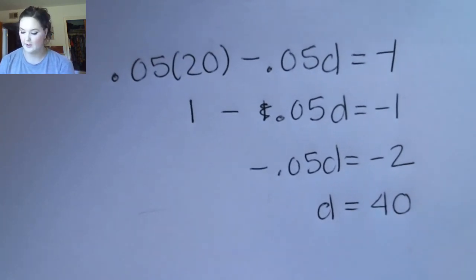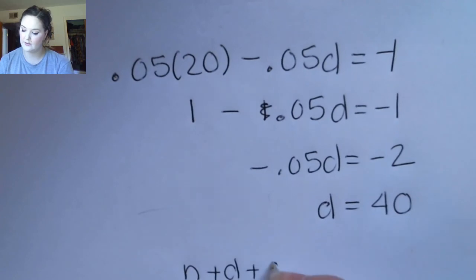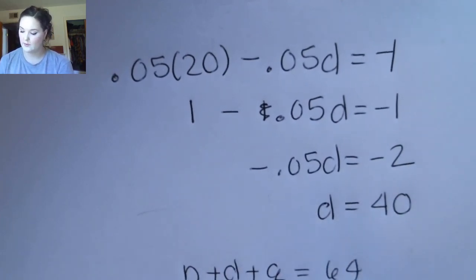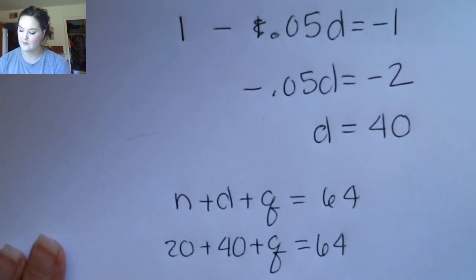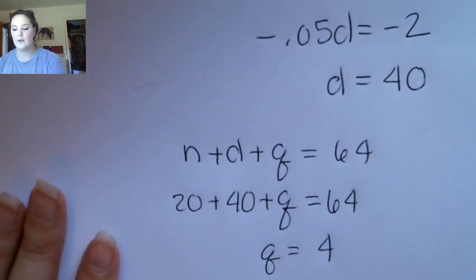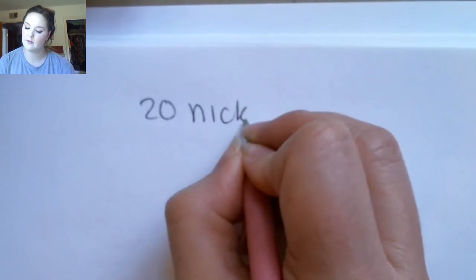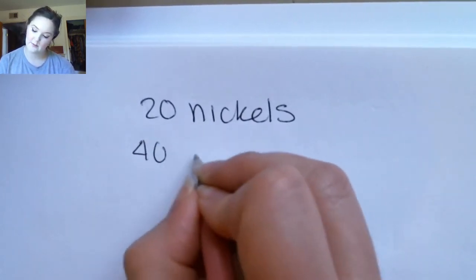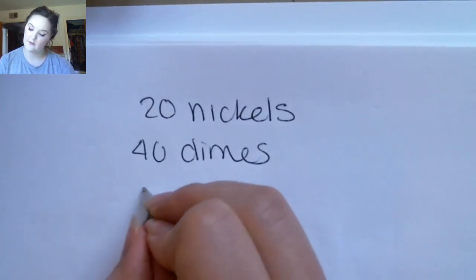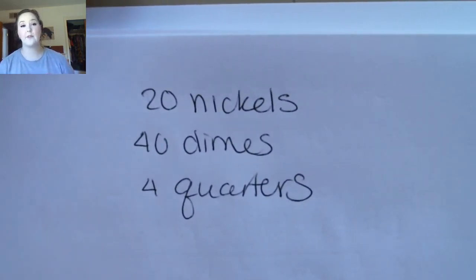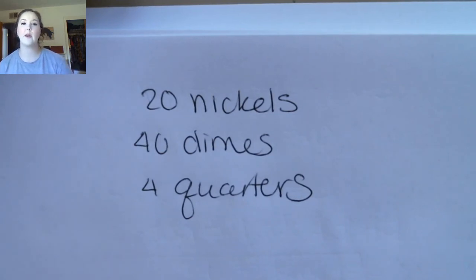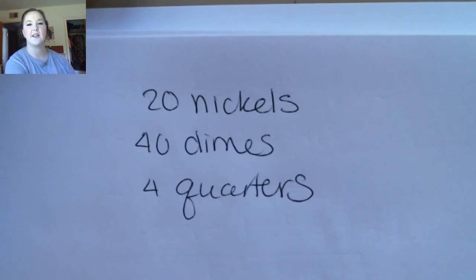My last step is to find q using n plus d plus q equals 64. With n equals 20 and d equals 40, I get q equals 4. The answer is: 20 nickels, 40 dimes, and 4 quarters. I know these problems can be long, but they're not actually super difficult — it's just a matter of keeping track of what step you're on and what you need to do next. I hope this makes sense, and I'll see you guys soon.